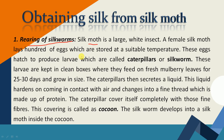A female silk moth lays hundreds of eggs which are stored at a suitable temperature. जो female silk moth होती है वो hundreds of eggs को lay करती है, जो कि suitable temperature पर store किए जाते हैं. These eggs produce larvae which are called caterpillars of silk moth. इन eggs में से larvae produce होता है जिसे हम caterpillars कहते हैं.